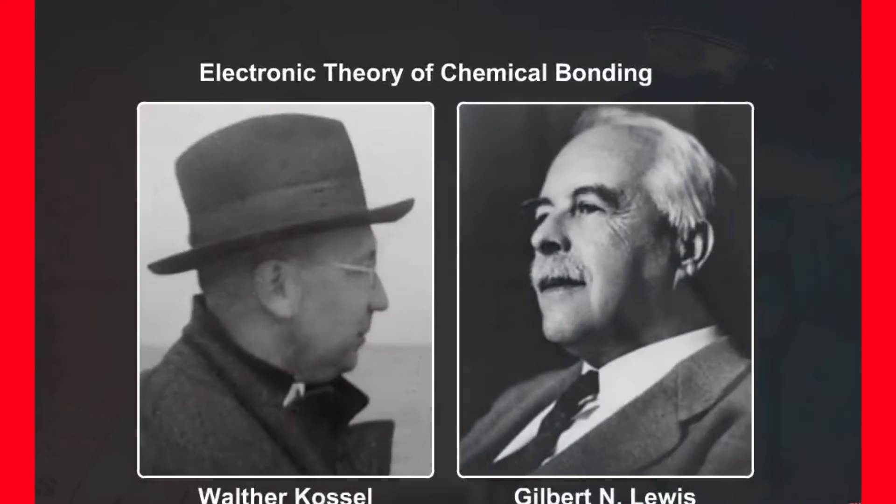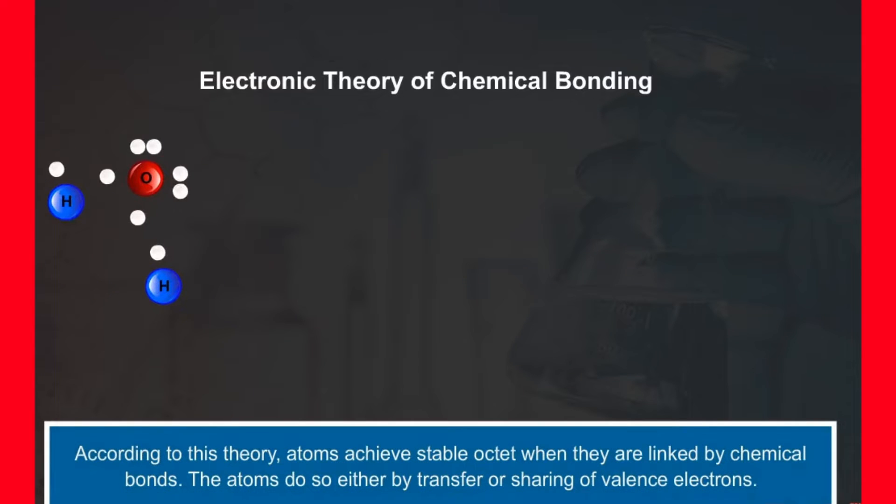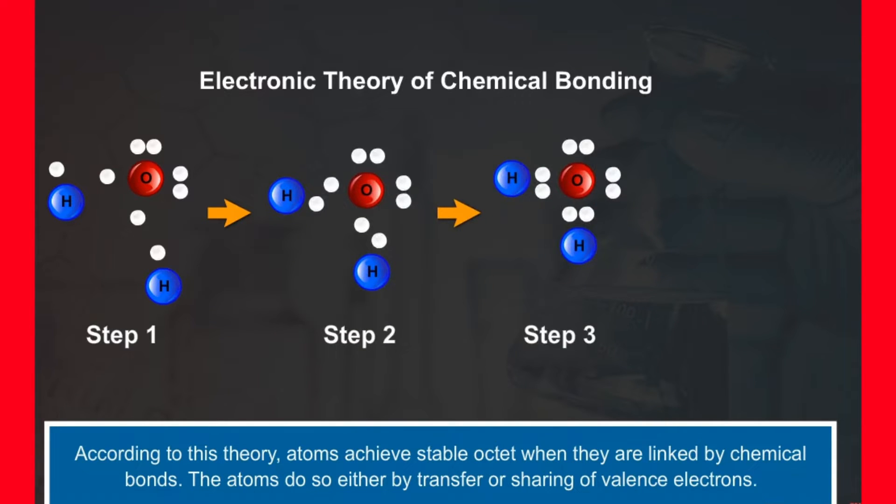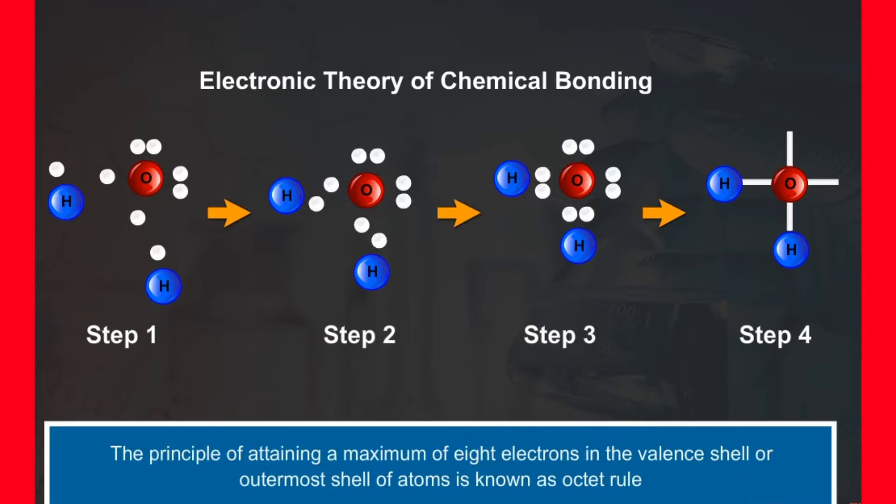Kossel-Lewis in 1916 developed an important theory of chemical combination between atoms known as electronic theory of chemical bonding. According to this theory, atoms achieve stable octet when they are linked by chemical bonds. The atoms do so either by transfer or sharing of valence electrons. The principle of attaining a maximum of 8 electrons in the valence shell or outermost shell of atoms is known as octet rule.